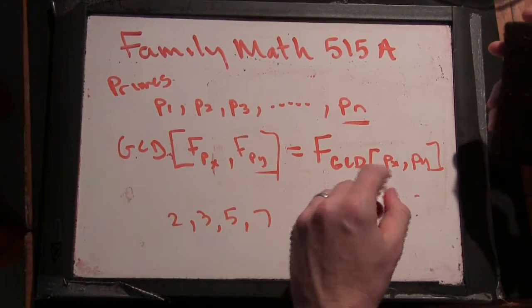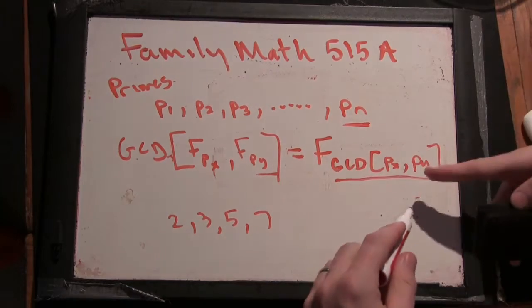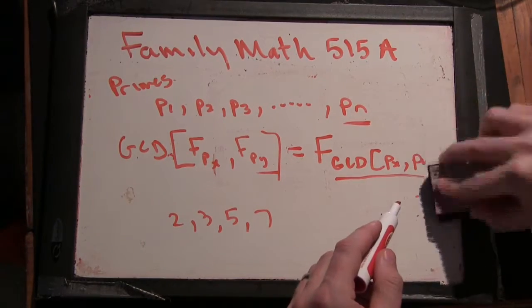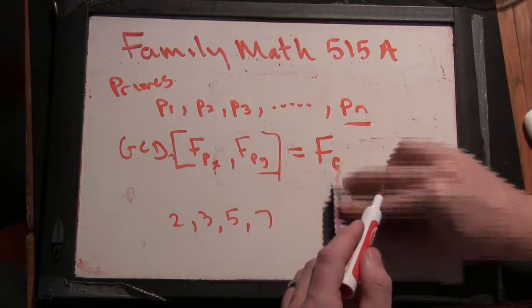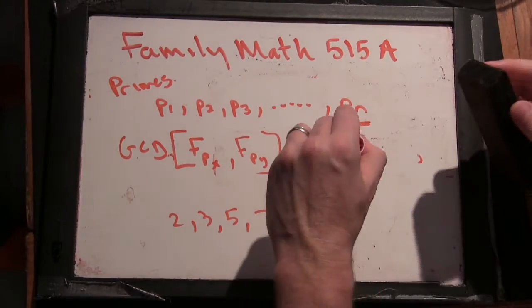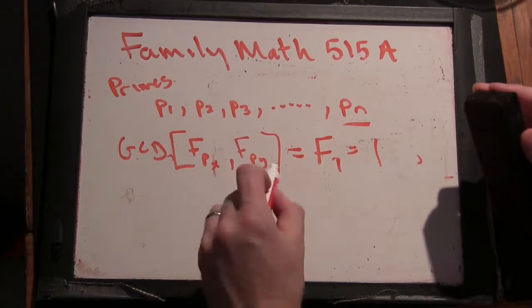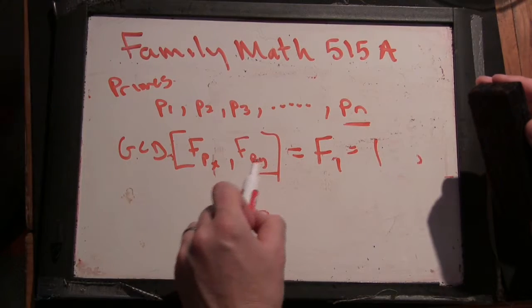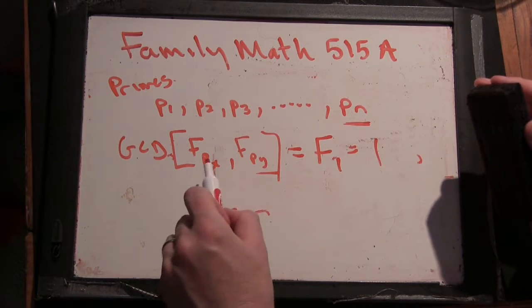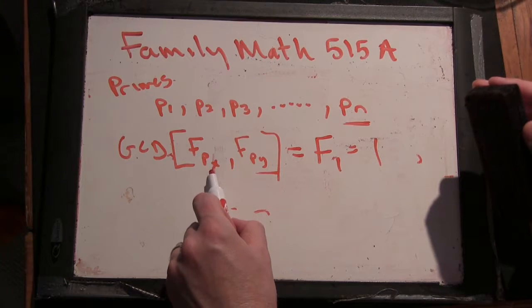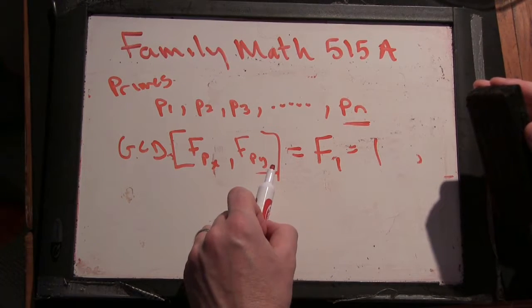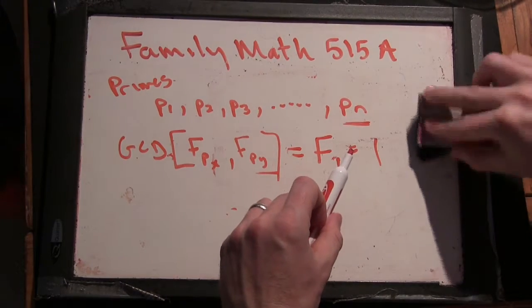So the Fibonacci number of the greatest common divisor of 2 primes is 1, which is 1. So the greatest common divisor of the Fibonacci number of Fibonacci prime number x and Fibonacci prime number y, they have to have no common divisors.